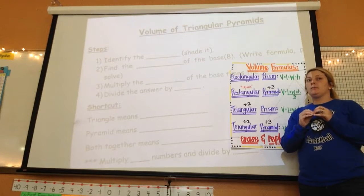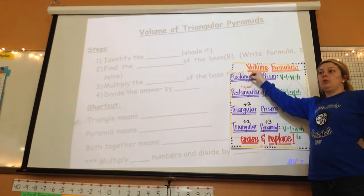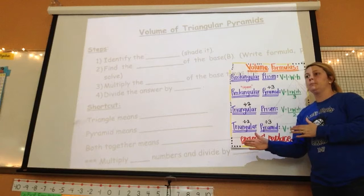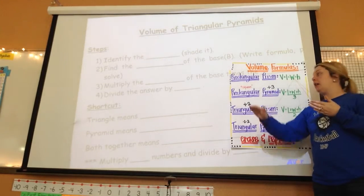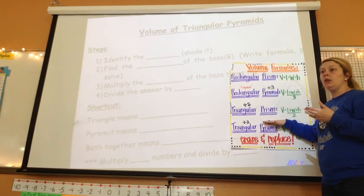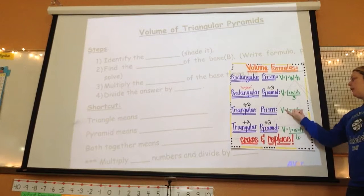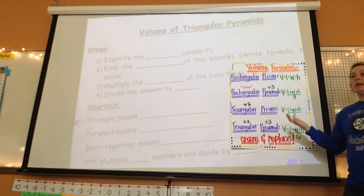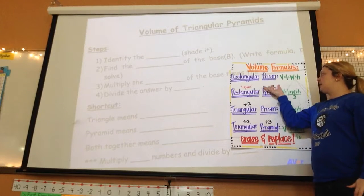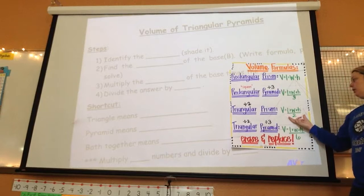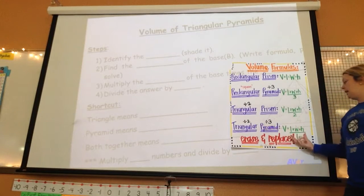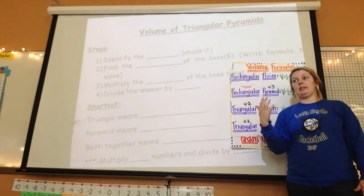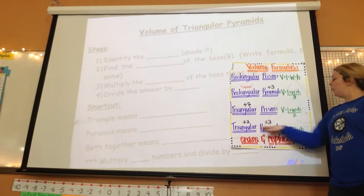The easiest part of this is you're going to have the words there on your test. It'll say rectangular pyramid or triangular prism. If you practice underlining and putting the division sign where it needs to be, you'll have memorized the formulas. Because what do I notice about the top of all of them? They're all length times width times height. Pyramid means to divide by three. Triangle means to divide by two. If I have a triangle and a pyramid, I divide by six.